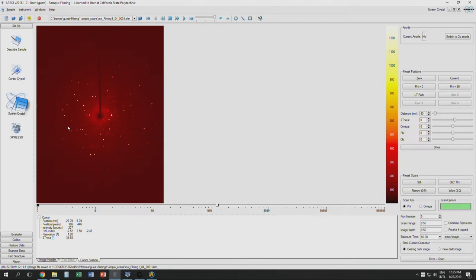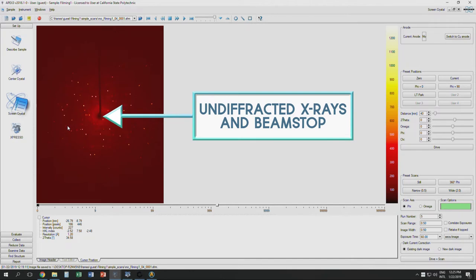In the center is a bright spot, or dark spot, which is where undiffracted x-rays strike the detector, and you may also see a vertical shadow, which is the beam stop.